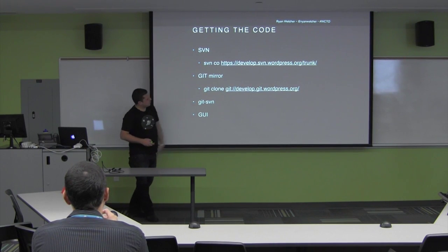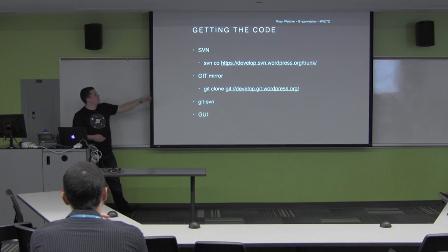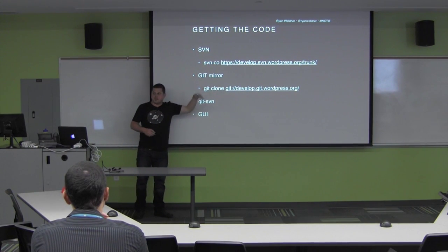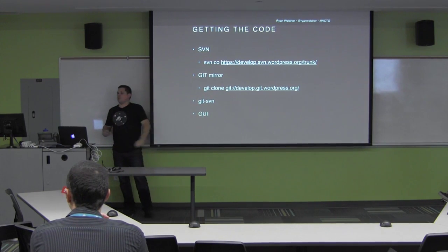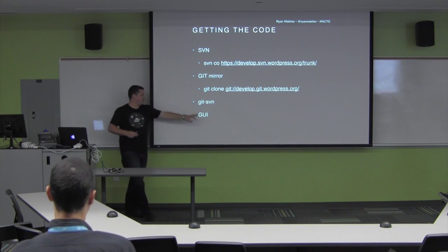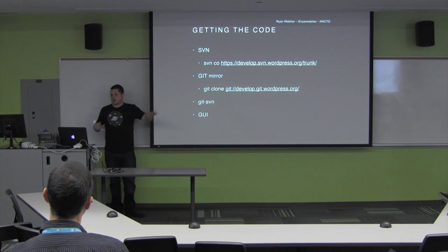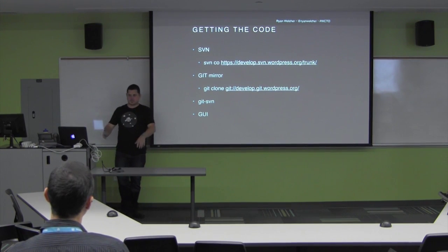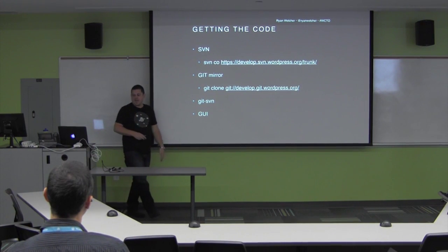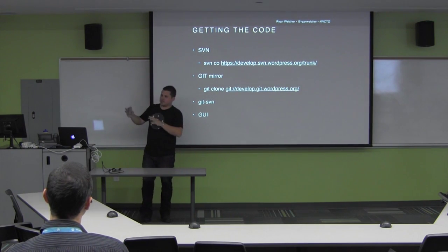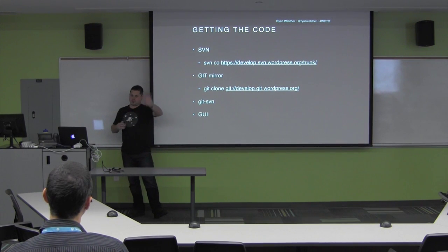There are four ways to get the code: you can use SVN checkout with the path to the repo; there's an unofficial Git mirror if you prefer Git; there's Git-SVN which is SVN commands inside Git; and you can use a GUI. There's nothing wrong with using a graphical user interface like Tortoise SVN or Tortoise Git — use what you're most comfortable with. At the end of the day, you just need to get the code on your computer. You don't push back to the repo because you don't have commit access. Instead, you generate patch files, attach them to a ticket in Track, and people with more access review and commit them.